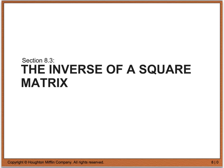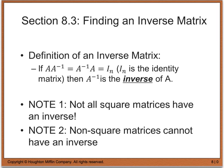Welcome back to chapter 8. Today we're going to look at section 8.3 again, and if you remember, 8.3 dealt with the inverse of a square matrix. The definition of an inverse matrix says that if matrix A times A inverse gives you the same thing as A inverse times A, which is I sub n — your identity matrix — then we say that A inverse is the actual inverse of matrix A. Not all square matrices have an inverse, and non-square matrices cannot have an inverse.